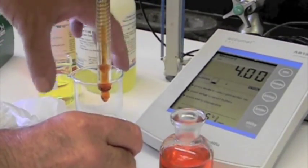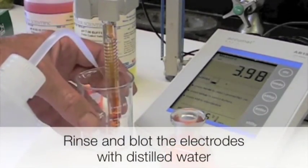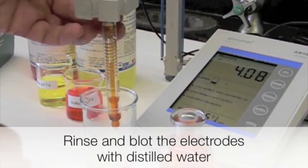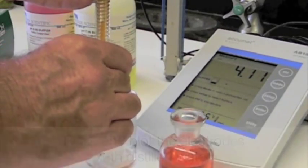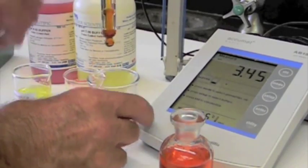Rinse and blot the electrode with distilled water. Immerse the electrode in pH 7 buffer solution and standardize.